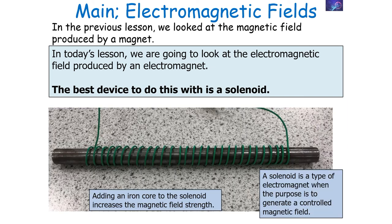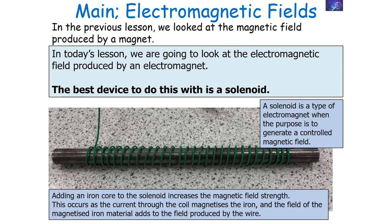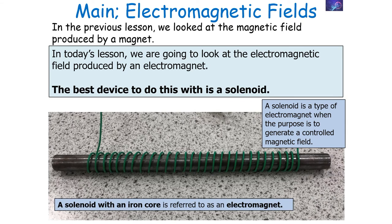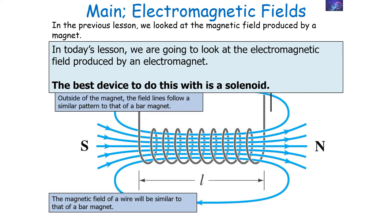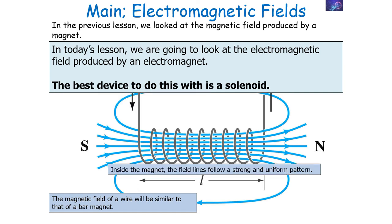You can increase the magnetic field even further by adding an iron core to your solenoid, because the current through the coil magnetizes the iron and the field of the magnetized iron adds to the field produced by the wire. Outside the solenoid, the magnetic field pattern is similar to that of a bar magnet, but inside the solenoid the field lines follow a strong and uniform pattern of straight lines close together.